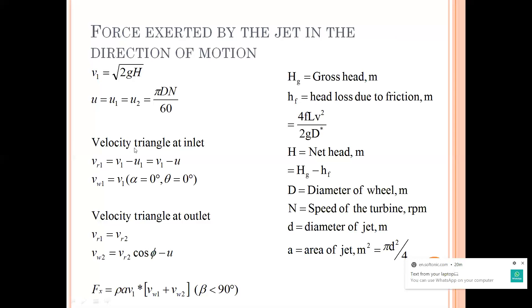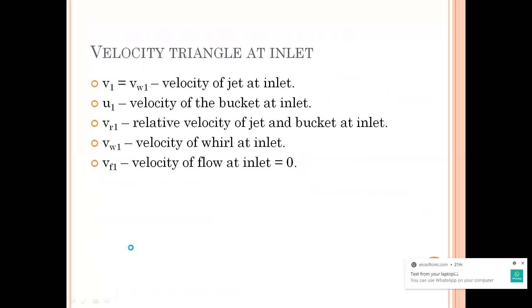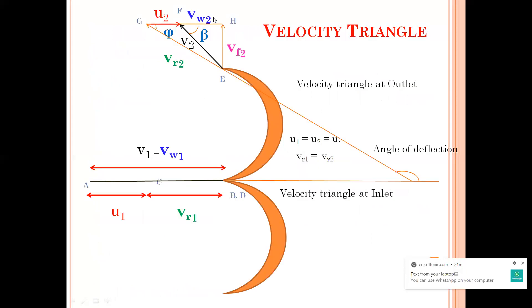Now we will draw the velocity triangle. At inlet it was all a straight line, so vr1 is equal to v1 minus u1. Since u1 = u2 = u, I can take v1 minus u. And your vw1 is equal to v1 — because your alpha is 0 and theta is 0. Now coming to outlet, my intention is to calculate the value of vw2.